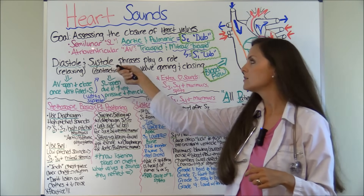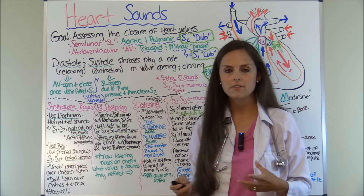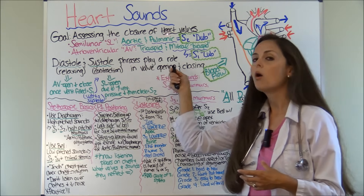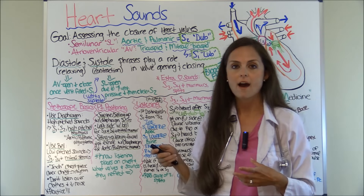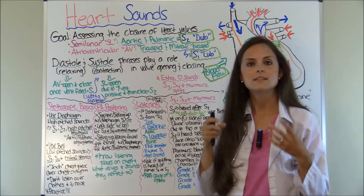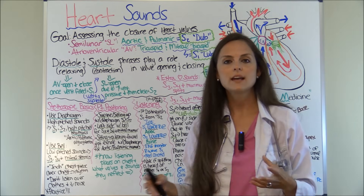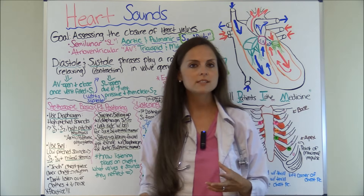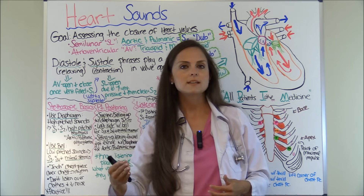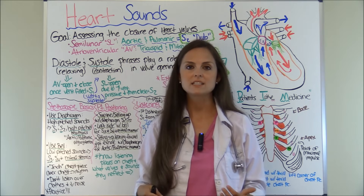Then we have the semilunar valves, or SL valves — your aortic and pulmonic valves. When they close, that is the S2 sound, the dub. So whenever you're listening to the heart, you hear lub-dub. Lub is S1, dub is S2.